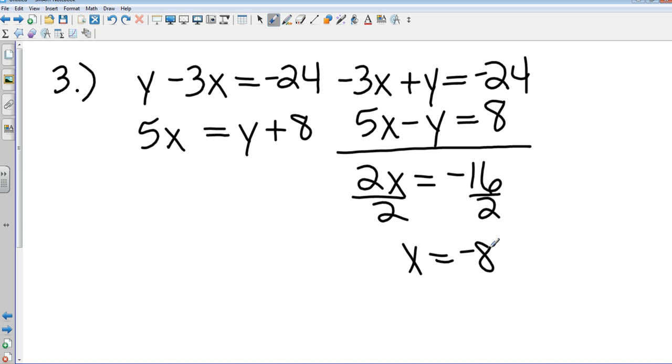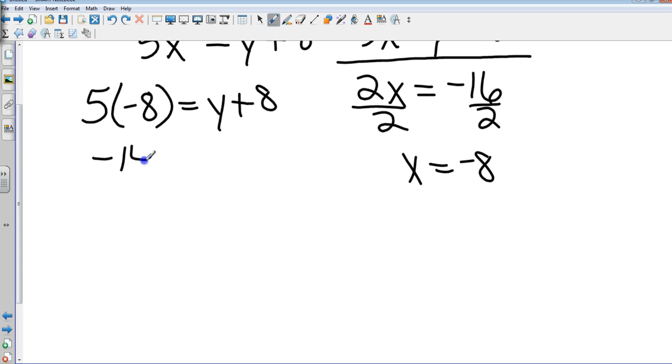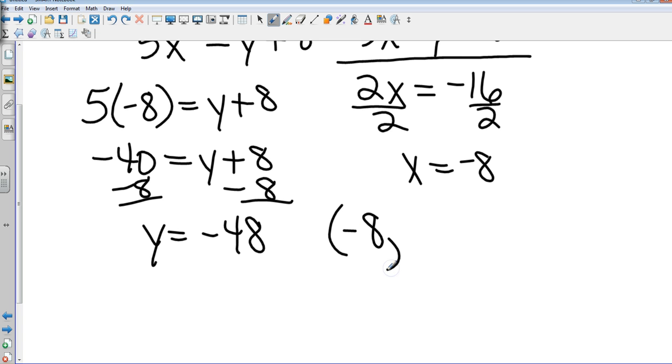All right, now take your pick. I like the bottom one because it doesn't have any negatives. Okay, so I'm going to take 5 times negative 8 equals y plus 8. So that gives me negative 40 equals y plus 8. To get the y by itself, I want to subtract 8 from both sides. And y, as crazy as it looks, is negative 48. How many got that? Awesome. Okay, so the answer is negative 8, making sure I got that in the right order, negative 48. This is one of the problems where you will love yourself for not choosing graphing. Okay, because if you had to graph that thing, your graph would be a page long to get to negative 48.